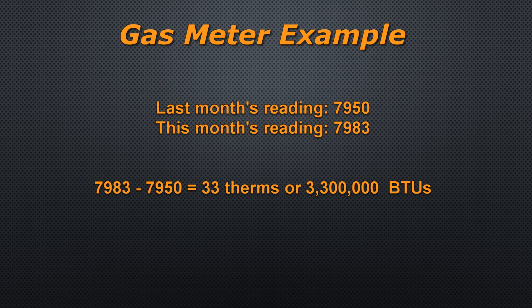So to complete our example, if last month's reading was 7,950 and this month's reading is 7,983, we subtract 7,950 from 7,983 and we're left with 33 therms of usage for this month.